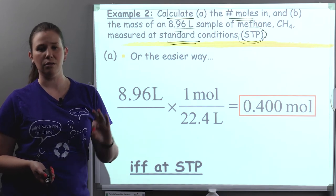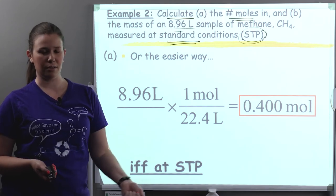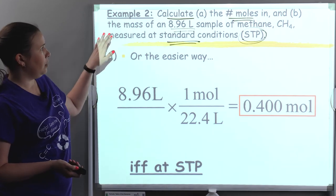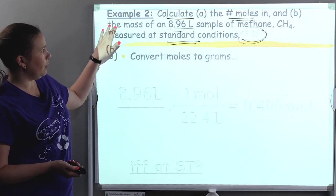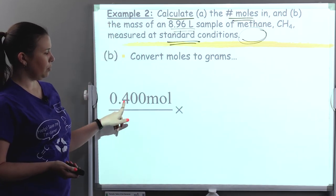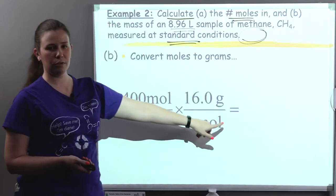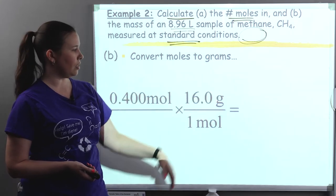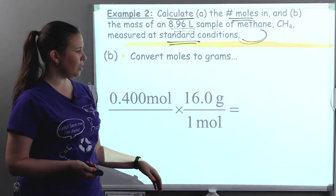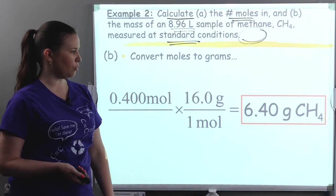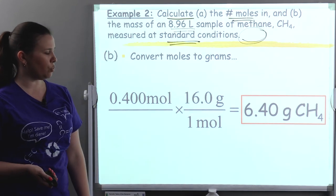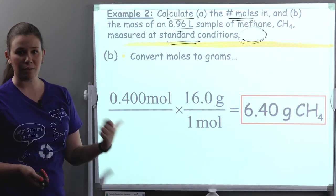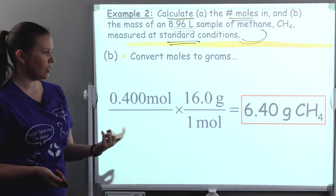Then for part B, let's quickly go from moles to grams. We put moles on top and moles on the bottom. The molar mass of CH4 goes on top, and so we get a final mass of 6.40 grams of methane, or CH4.